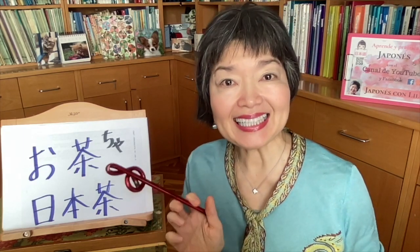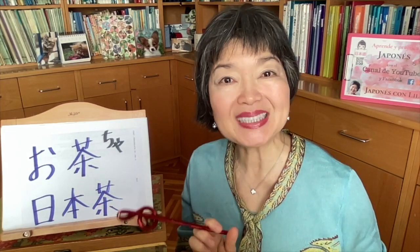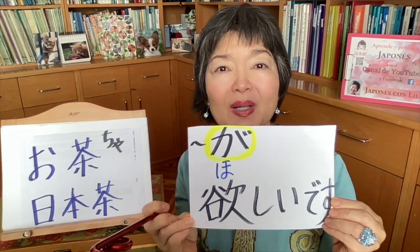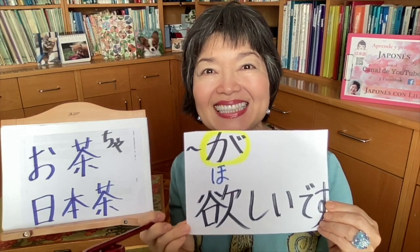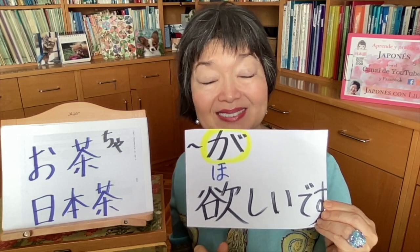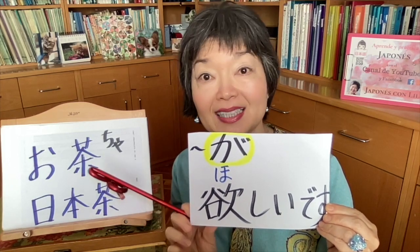お茶 (ocha) means 'tea,' but usually it refers to Japanese tea — green tea. English tea is こうちゃ (koucha). お茶 or 日本茶 (nihoncha) specifically means Japanese green tea. So お茶 が ほしいです means 'I want some tea,' and お茶 is the noun before が.